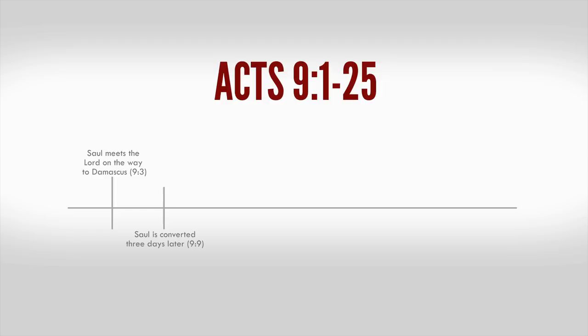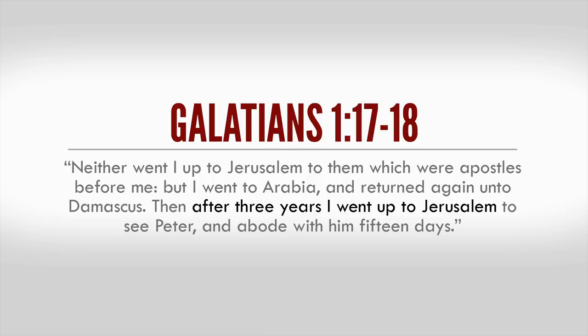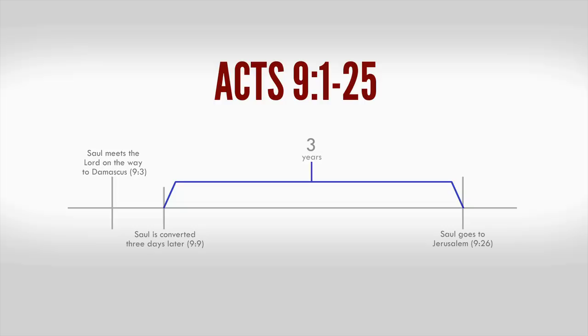It ends with the events immediately before his return to Jerusalem in Acts 9:26. Paul recounts these events to the churches of Galatia and gives us a time reference. In summary, after his conversion, it would be three years before he would go to Jerusalem. Some of the events occurring during this three-year period include Saul's conversion, Saul's work in Damascus, chapter 9:19, and probably the longest period of time being Saul in Arabia. This was possibly part of his initiation as a spirit-filled prophet, much like John and Jesus, Matthew 3:1 and Matthew 4:1.